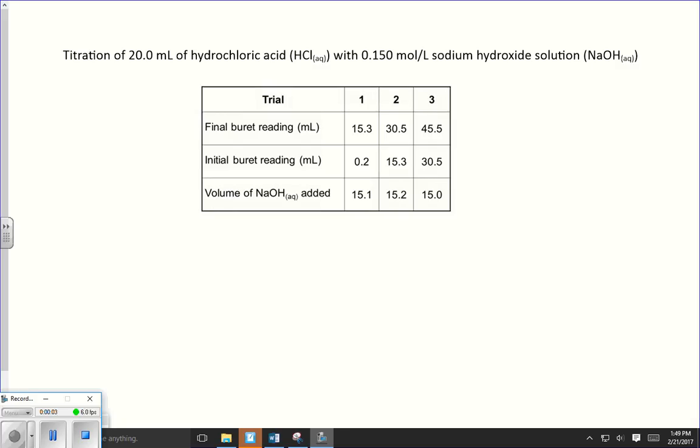All right, the point of this video is to learn how to calculate the concentration of a sample by doing a titration. So here we have all the data necessary to do that. The title of our titration table is titration of 20.0 milliliters of hydrochloric acid with 0.150 moles per liter of sodium hydroxide solution.